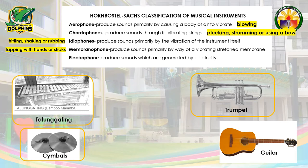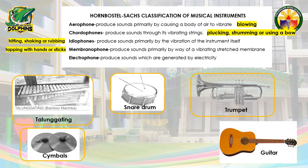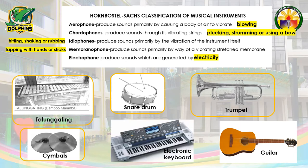Membranophones can produce sounds by means of tapping with hands or sticks. These are instruments with a membrane, like the snare drum. And the last one is Electrophones, which can produce sounds generated by electricity. Examples are the electronic keyboard or electronic guitar.